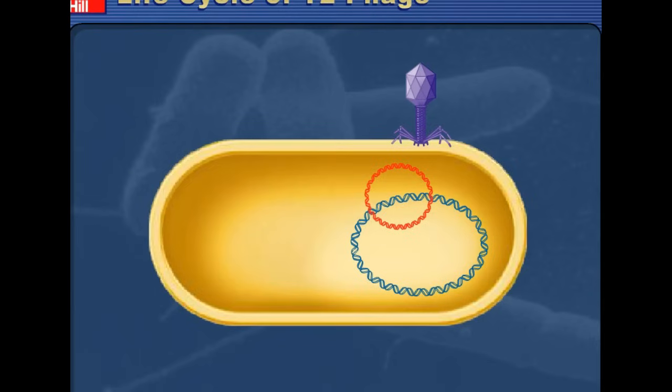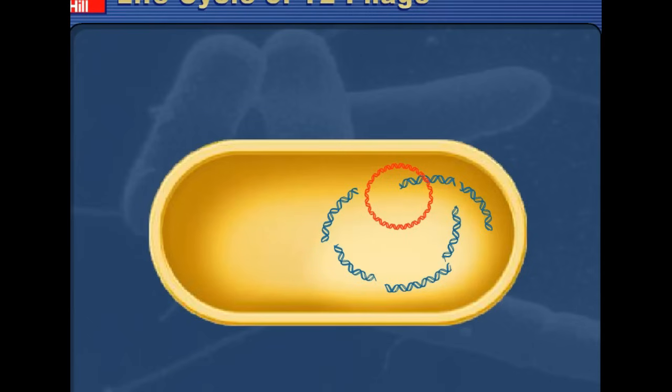And so if we see what happens from this point on, we'll now see that the host DNA has been destroyed. The genes of the phage DNA directed the host DNA to fall apart. And so now the only DNA that's left in the bacteria is the DNA from the virus, and I'm sure you can figure out what's going to happen from this point on.